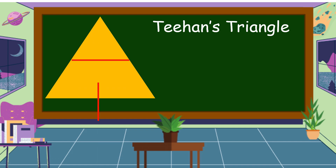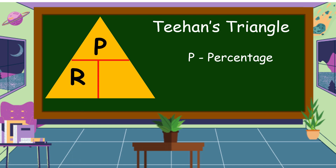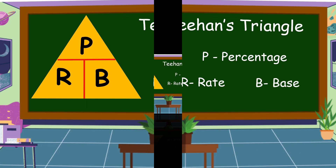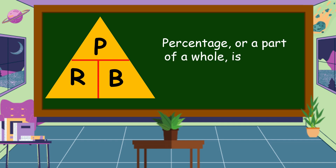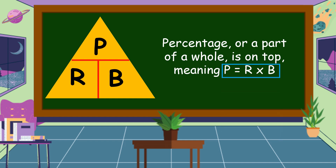This is the T-Hence triangle. P stands for the percentage. R stands for rate, B stands for the base. Percentage, or a part of a whole, is on top, meaning percentage is equal to rate times base. This is the formula if we're going to find the percentage.